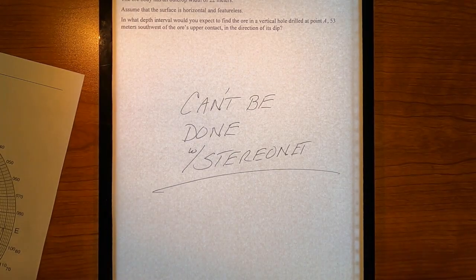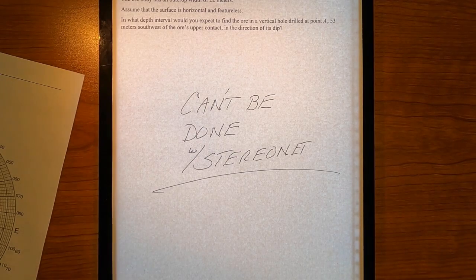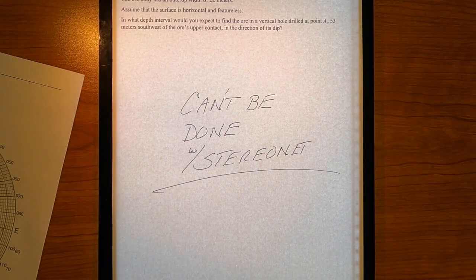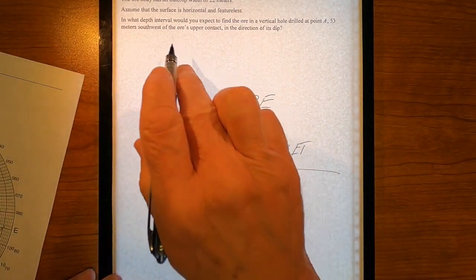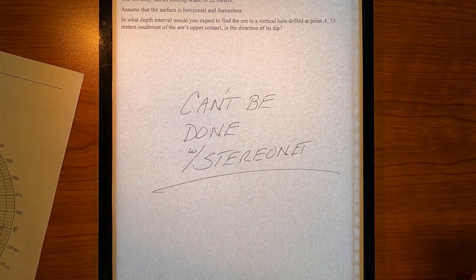A stereo net can only provide angles. We can only solve geometric problems with a stereo net. We can't solve a problem that asks for a dimension because dimensions are not preserved in a stereo net.